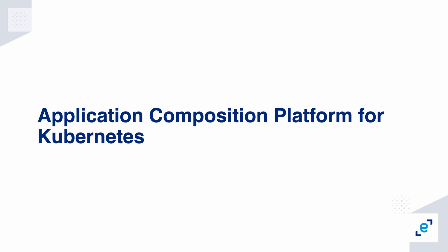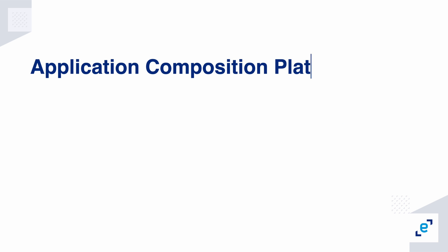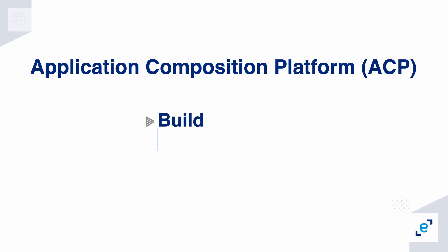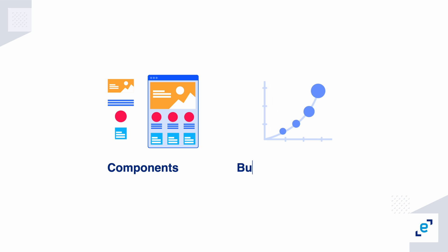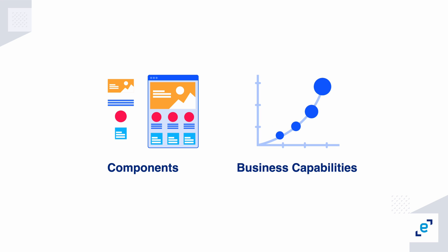An Application Composition Platform is a set of technologies that enable teams to build, deploy, run, and manage applications developed by composing together components and business capabilities.